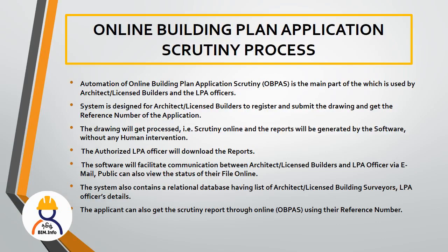In this slide, there is a step in the scrutiny process. In the first step, a licensed builder or registered architect can register their ID on the website. If you have a DWG drawing - an AutoCAD drawing - you will import the application with the plot number, building register number, and other details. You will receive a reference number.